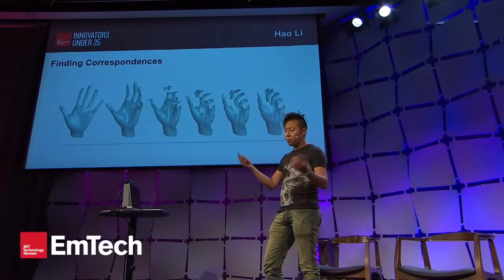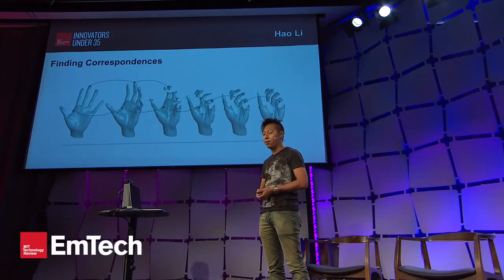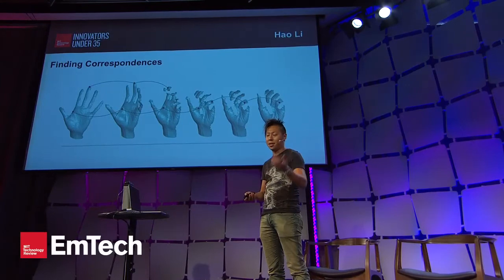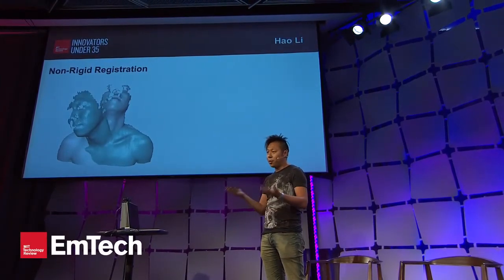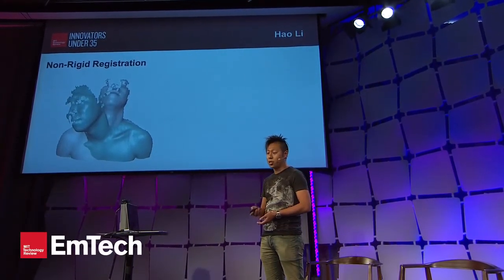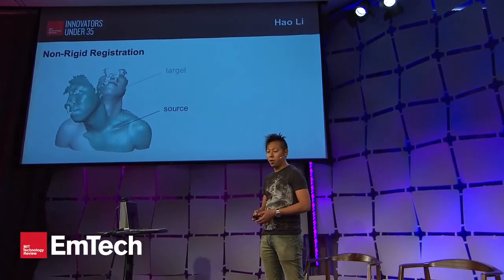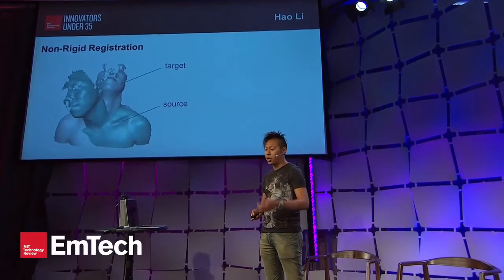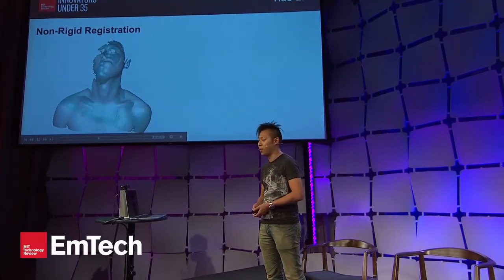The core problem here is to find correspondences. The input data basically have zero meaning to the computer and they're highly incomplete. The solution we came up with is a non-rigid registration algorithm that allows you to warp a source shape — an arbitrary 3D shape — onto a target without having a user specify any correspondences.